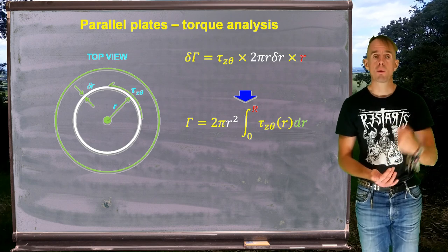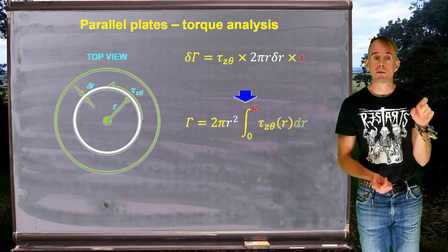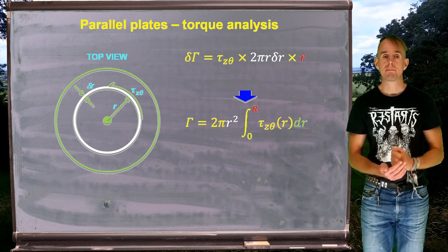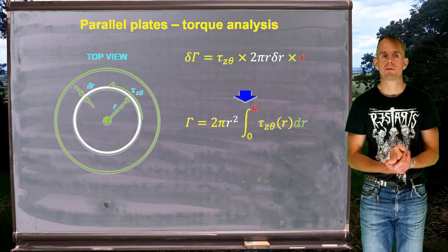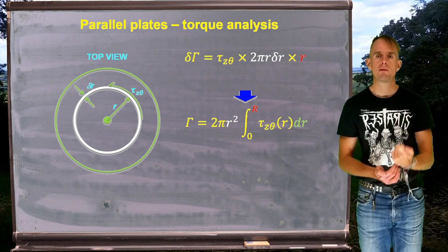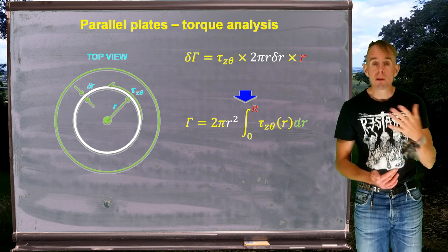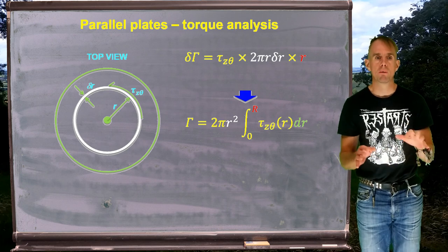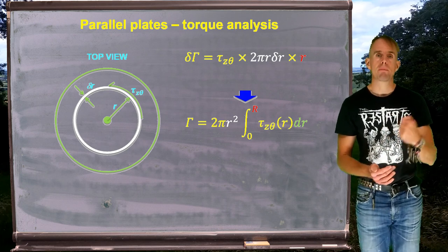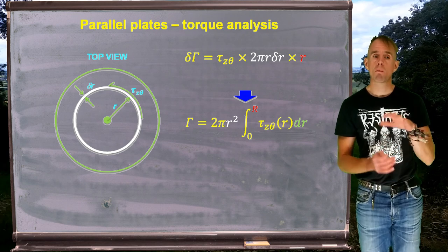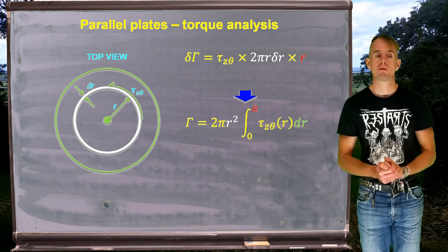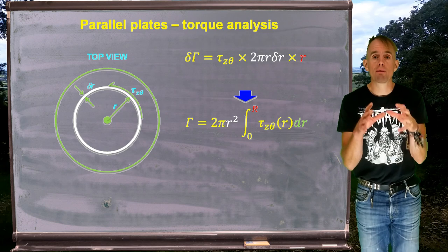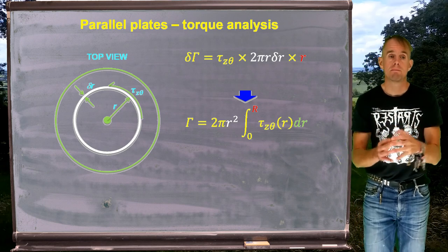We end up with an expression for torque on the top plate: integrating from the middle to the outer edge at radius R. Gamma (our torque) equals 2π times the integral from zero to R of r² · tau_zθ(r) dr. As with the capillary workflow, we do not substitute a constitutive equation for tau_zθ, because doing so would assume the rheological response of the fluid — which is exactly what we do not want to do. Instead, we swap variables to keep the unknown rheology within the equation.